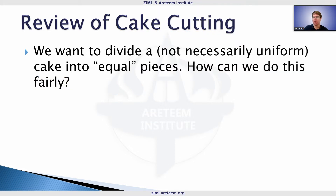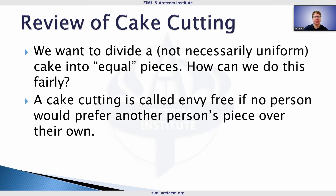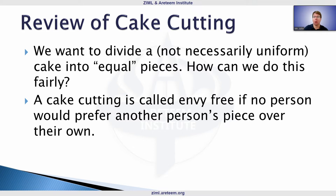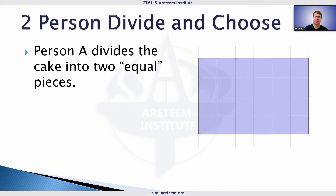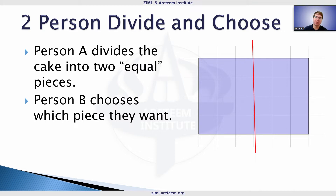One of our ways of talking about equal pieces is envy-freeness. A cake cutting is called envy-free if no person would prefer another person's piece over their own — we don't want to look at somebody else's piece and wish we had it instead. It's important that we don't assume a uniform cake; this isn't a geometry problem of dividing a shape into equal pieces. It's about what happens when people want different things. For two people, the algorithm is simple: person A divides the cake into two pieces, and person B chooses.